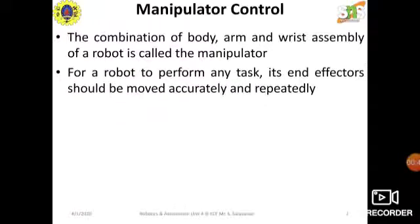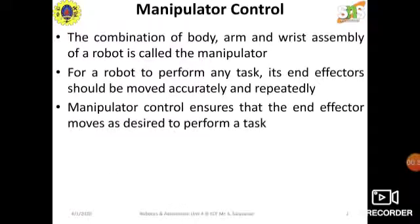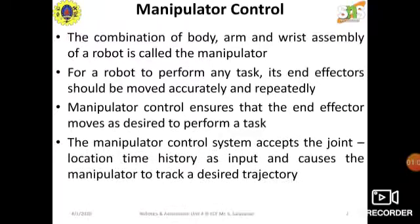For the robot to perform any task, its end effector should be moved accurately and repeatedly. Manipulator Control ensures that the end effector moves as desired to perform a task. The Manipulator Control system accepts the joint location time history as input and causes the manipulator to track a desired trajectory.